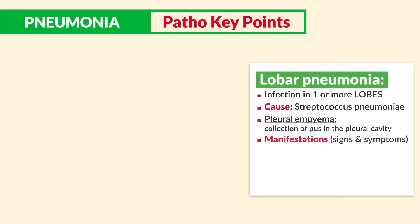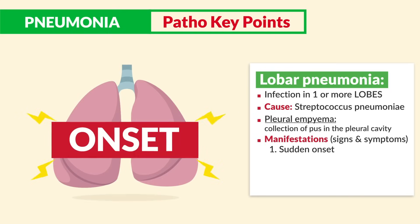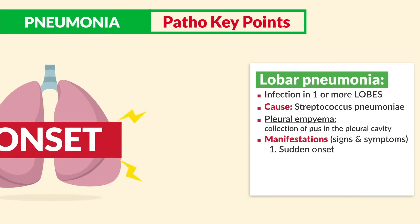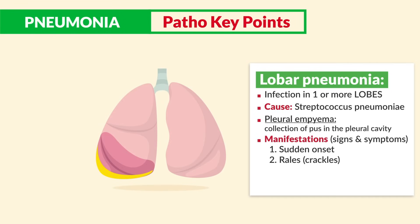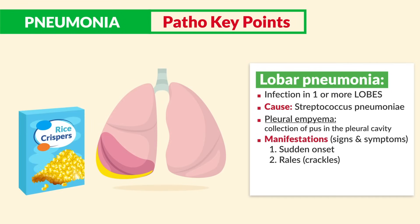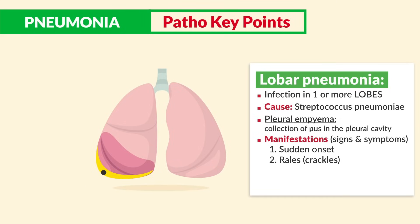In terms of manifestations: number one, lobar pneumonia has a sudden onset. Number two, we hear rales or rails — described as crackles — an abnormal breath sound resulting from rumbling mucus within the lower airways, indicating fluid inside the lungs. Described as a small clicking, bubbling, or rattling sound.